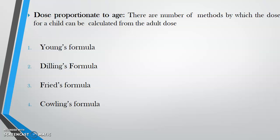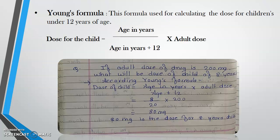For doses proportional to age, there are four formulas. The first formula — Young's formula — states: the dose for the child is equal to age in years divided by (age plus 12), multiplied by the adult dose.